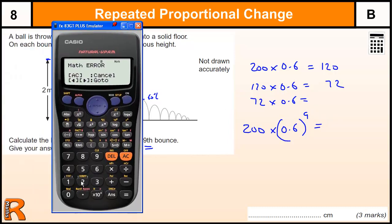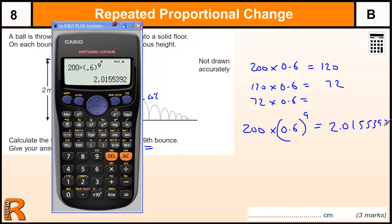And that is all we are doing, so 200 times by 0.6 to the power of 9 gives me 2.0155392 cm or 2 cm to the nearest whole number.